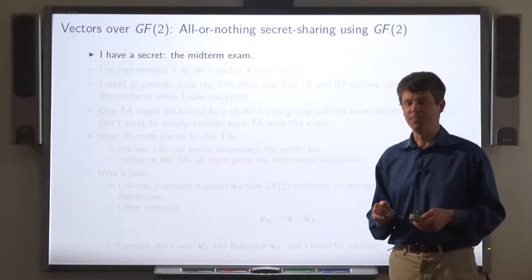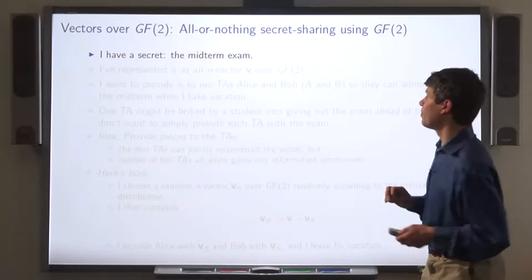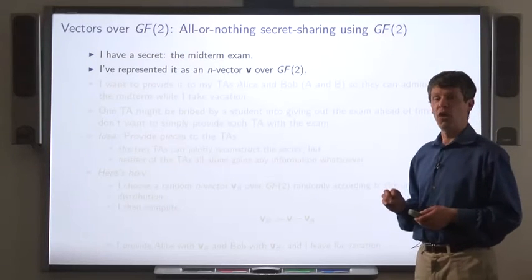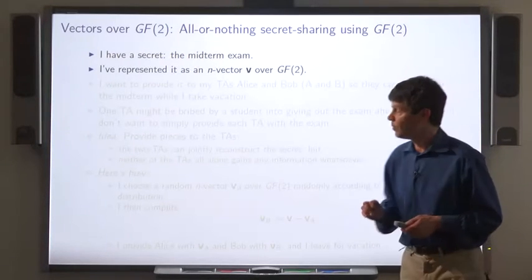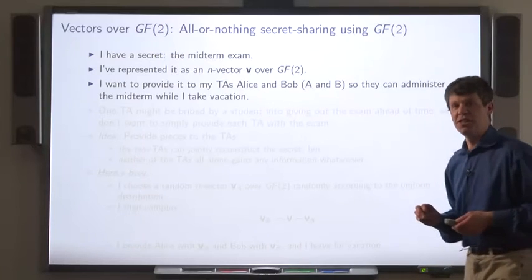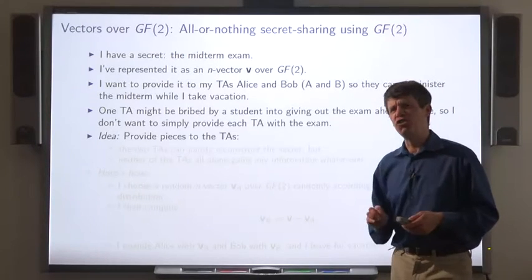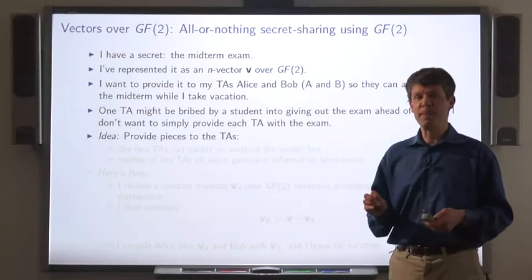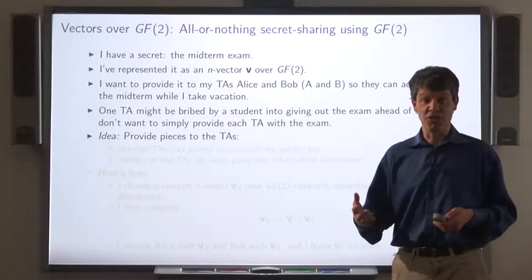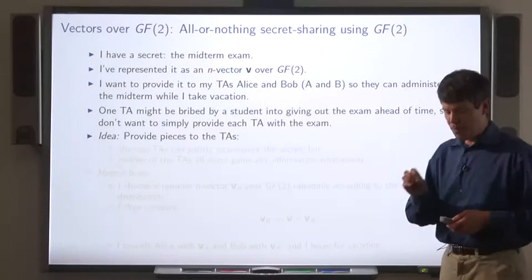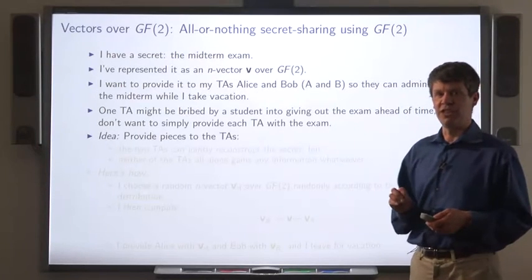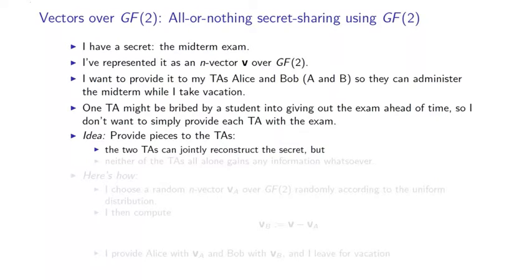Here's another use of the same idea. Suppose I have a secret — the midterm. I'll represent it as an n-vector over GF2. Now I want to provide it to my teaching assistants so that I can go out on vacation. However, I don't completely trust my TAs — one of them might be bribed to give away the midterm before its time. So the solution is to provide pieces to the two teaching assistants. I want the two of them jointly to be able to reconstruct the midterm, but I don't want any one of them acting alone to know anything about the midterm.